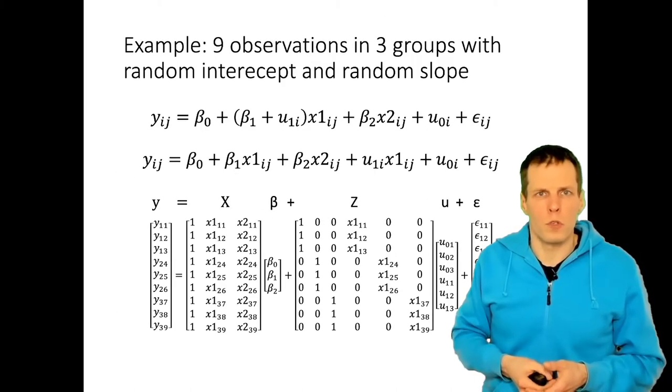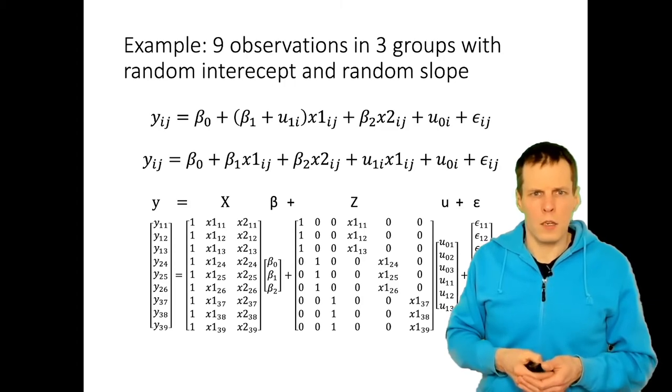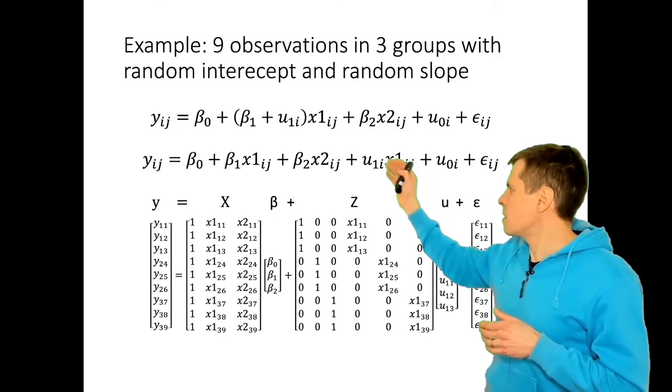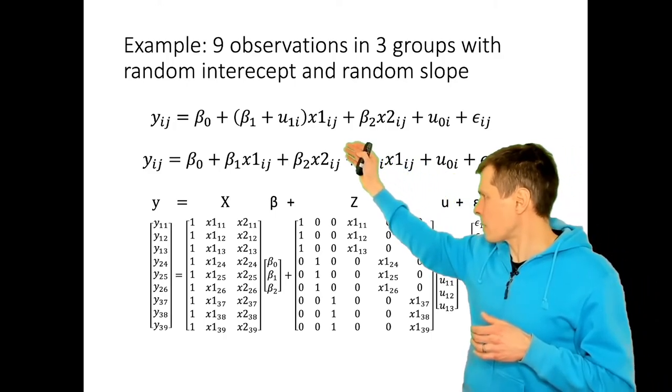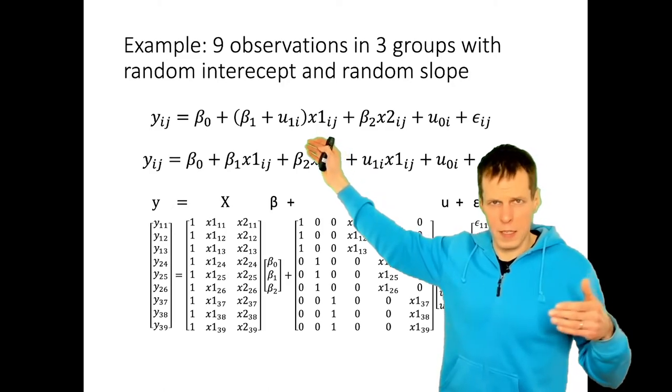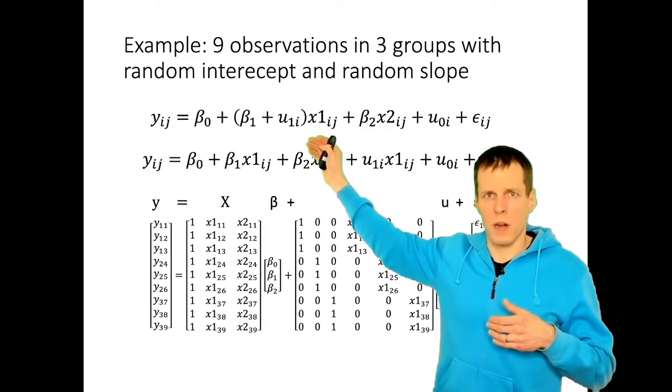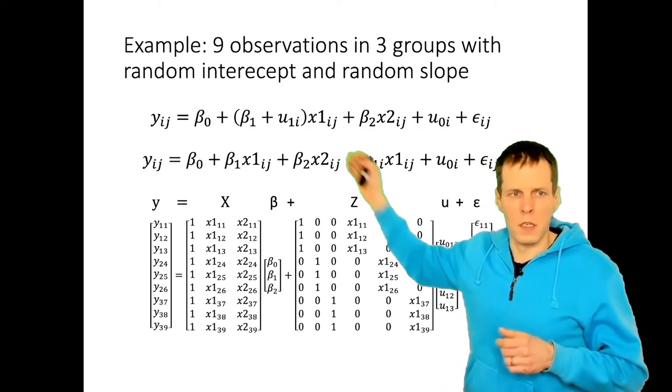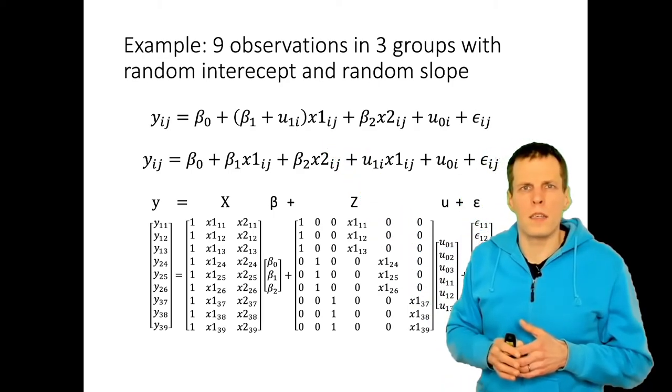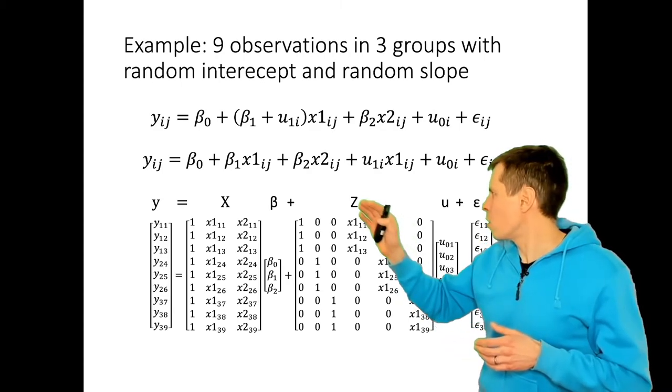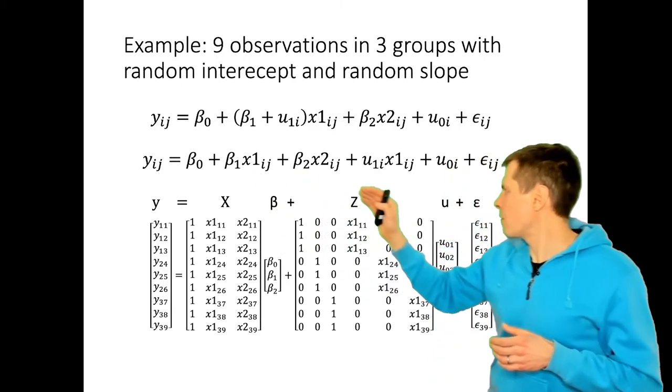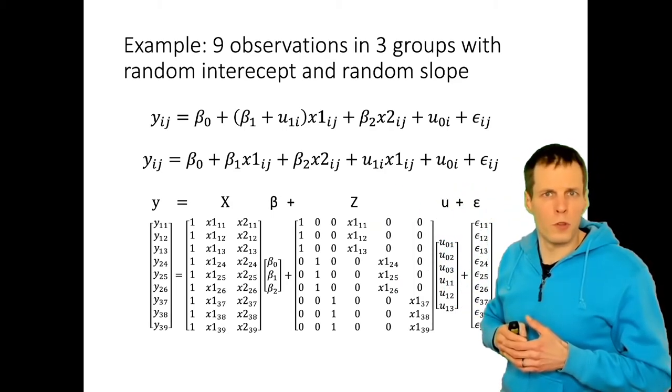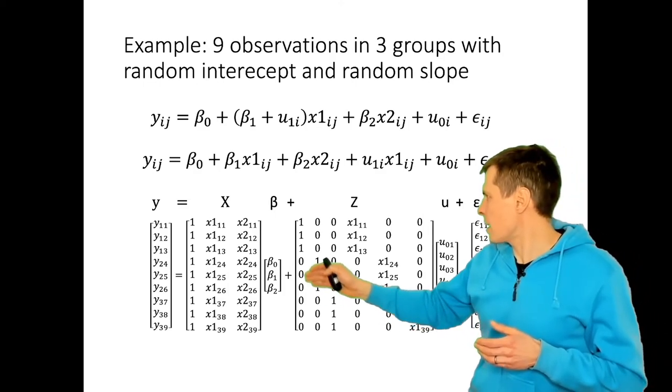So how about random slopes? Let's take a look at this example here. The random slope model means that the slope of x_i, x1, is the sum of the fixed part β plus the random effect. So the slope of x1 varies between clusters and we can reorganize the equation a bit. We have the fixed part here and then we have the random part here. And we just put those into the matrices.